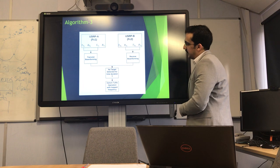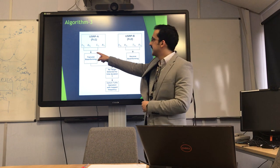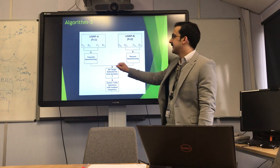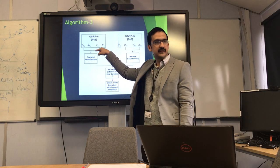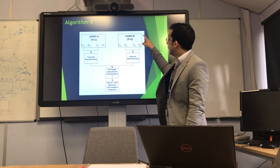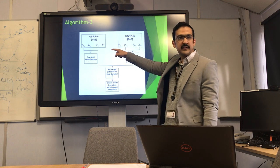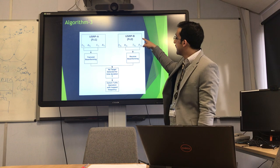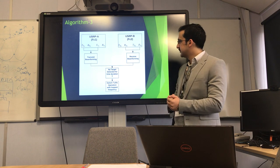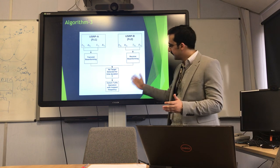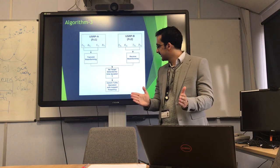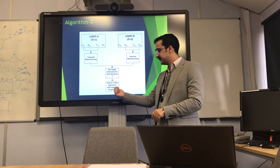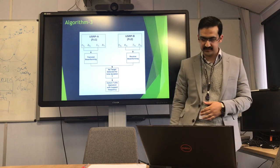In the third algorithm, only USRP A is used as a transmitter, but transmit beamforming is done using its two different channels, which requires synchronization — but since they are on the same device, that is not difficult. USRP B performs receive beamforming. If no target is detected for some time duration T, corresponding switching operations can take place.